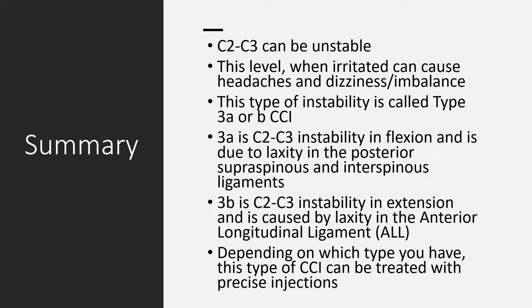In summary, C2-3 can be unstable. This level, when irritated, can cause headaches, dizziness, and balance issues. This type of instability is called type 3A or B CCI — 3A in flexion, 3B in extension. If it's instability in flexion, that usually involves the supraspinous and interspinous ligaments in the back that are unstable. If it's in extension, that usually involves the anterior longitudinal ligament that is loose. Depending on which type you have, this can be treated with precise injections. The flexion type 3A can be treated with just posterior injections, and the extension type 3B needs anterior longitudinal ligament injections, which are a bit more involved.